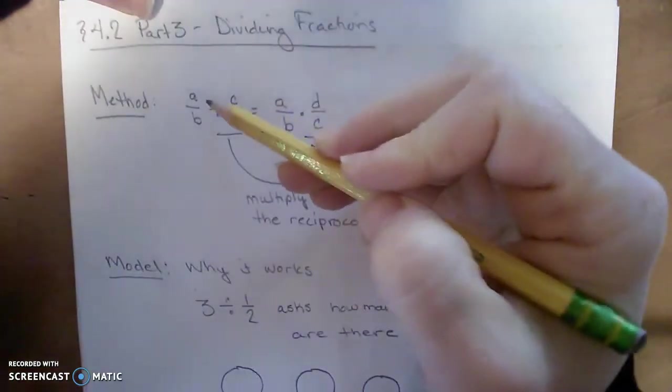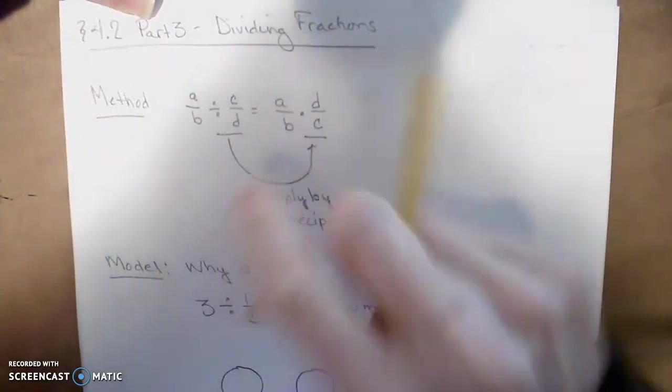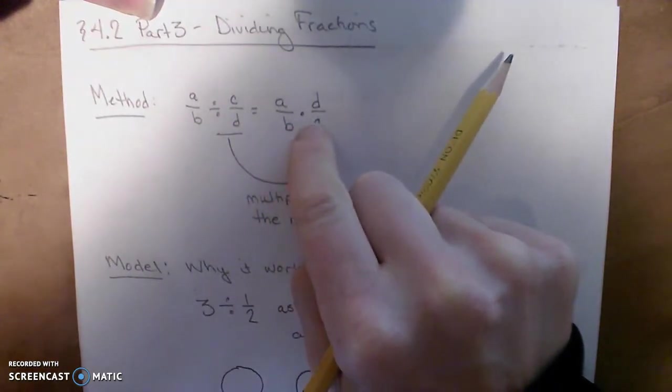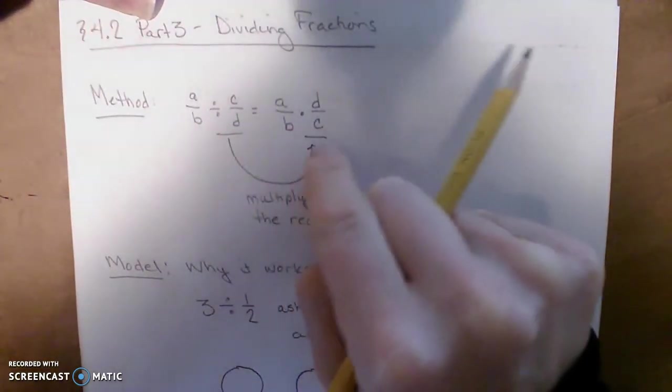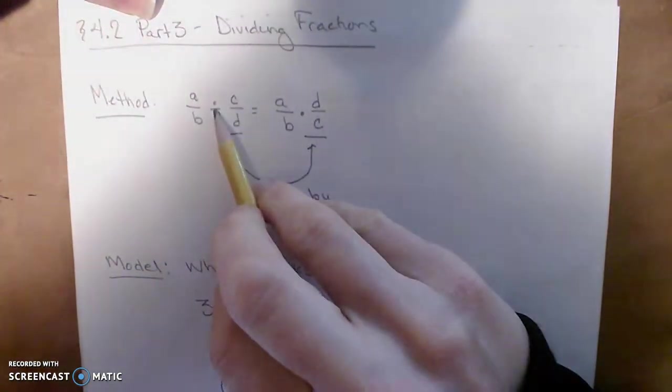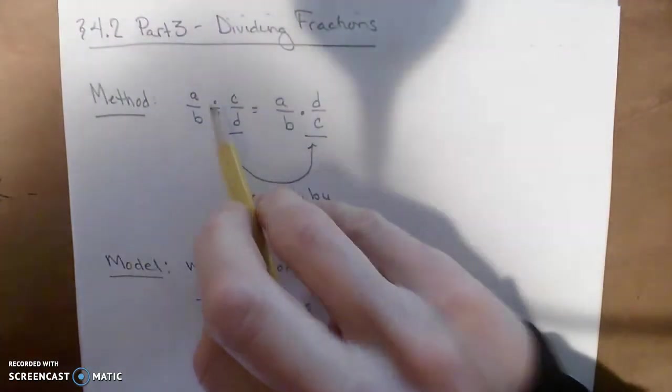The method is if you're dividing A over B divided by the fraction C over D, then the method is to multiply by the reciprocal of the second number. So basically, every division problem can just be turned into a multiplication problem.